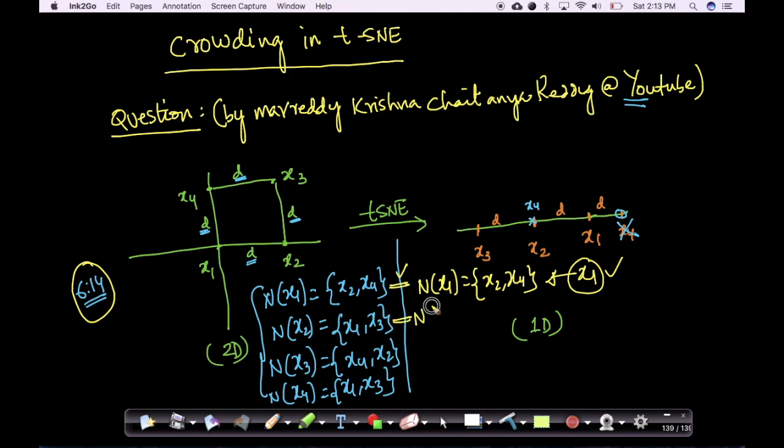What about x2 now? What is the neighborhood of x2? Neighborhood of x2 now is which all points are at a distance of d or less than d. You have x1, you have x3 and x4 because x4 is exactly overlapping with x2. It's at a distance of 0.